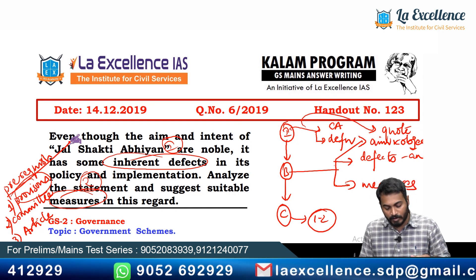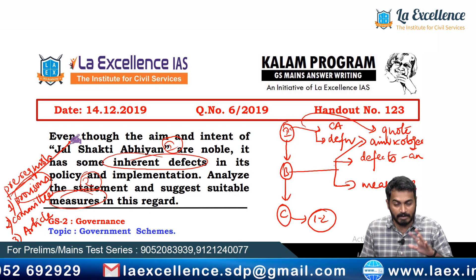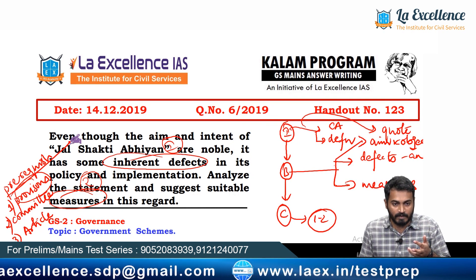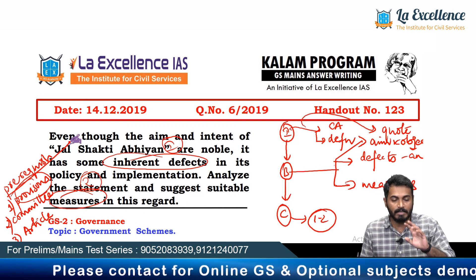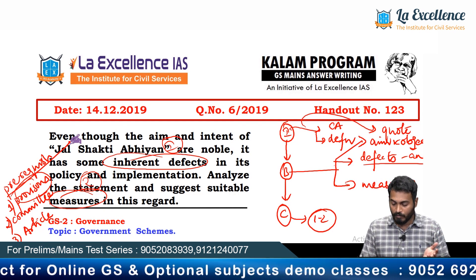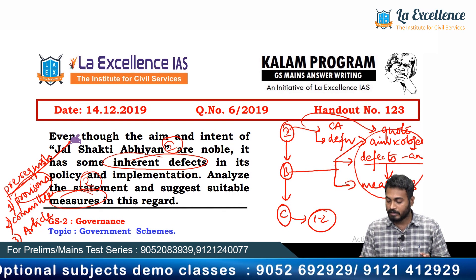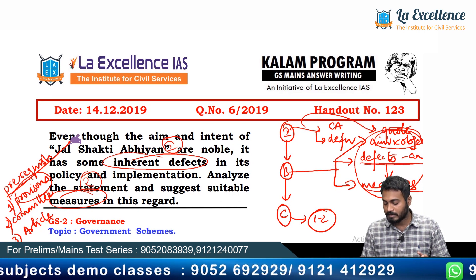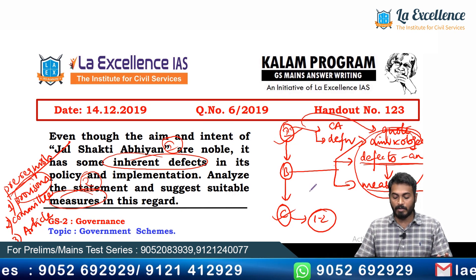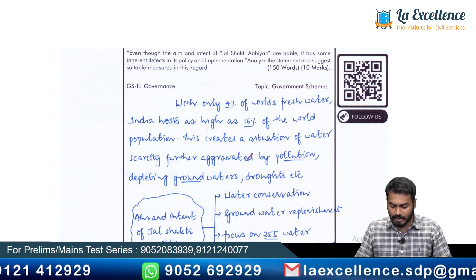The question itself started by saying 'the aim and intent of Jalshakti Abhiyan is noble,' so you should warm up the body by acknowledging that the intent is positive but there are certain problems in policy and implementation, and then propose measures to address those issues. This becomes a holistic approach that enriches the answer. Introduction and conclusion are mandatory, and this is the overall structure — now let's look at a student's answer and evaluate it.